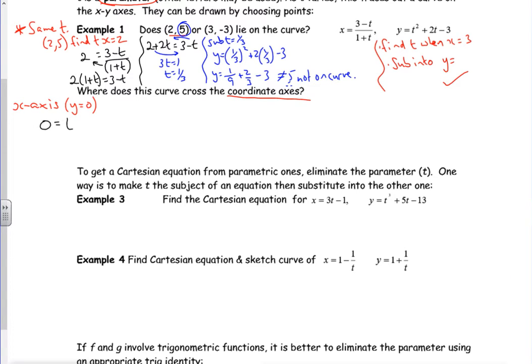So I've got 0 = t² + 2t - 3. If I put that into polynomial, I get t is 1 or t is -3.